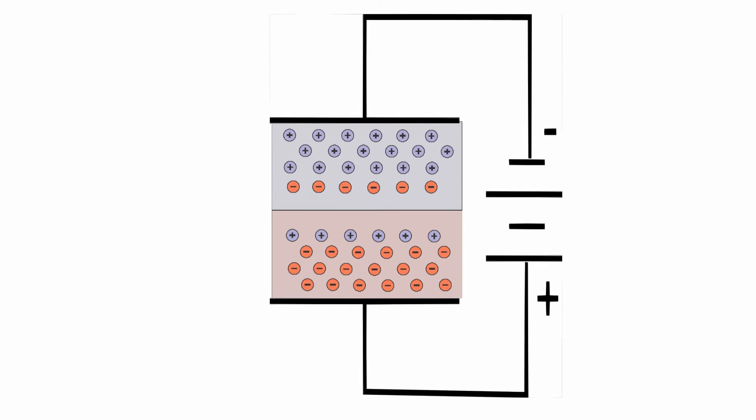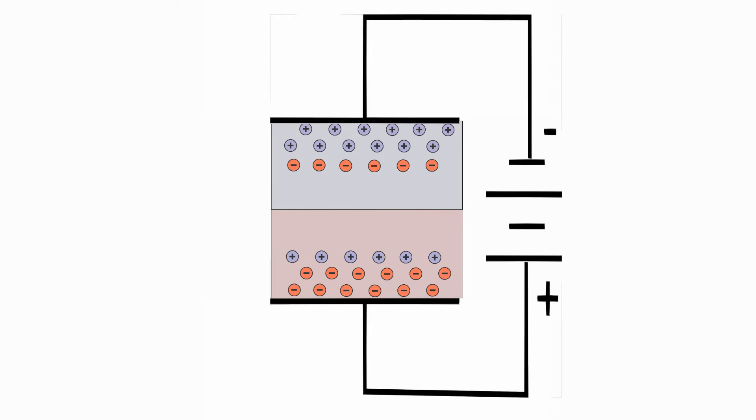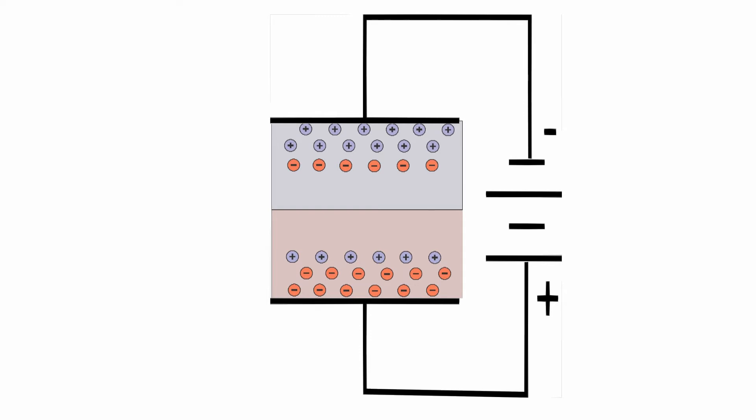Now, if we reverse the battery connections, so the positive lead is connected to the n-material and the negative lead is connected to the p-material, this increases the potential across the junction, enlarges the depletion region, and blocks carriers from moving across the junction. So, a semiconductor p-n junction is a diode. It allows current to flow in one direction, but not in the reverse direction.